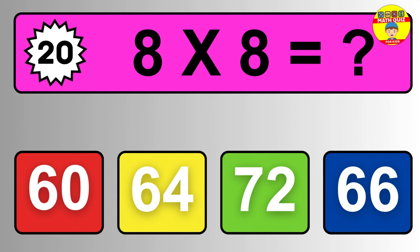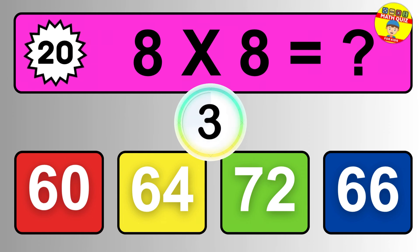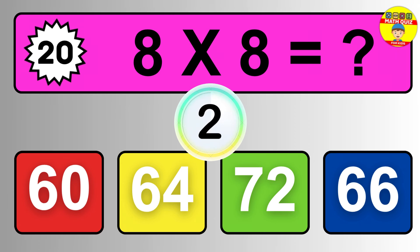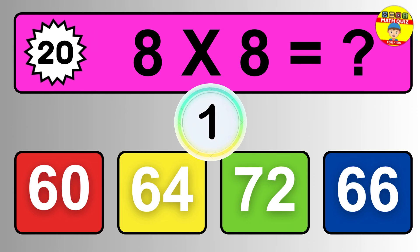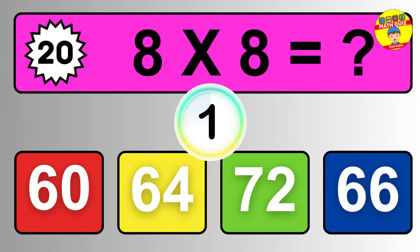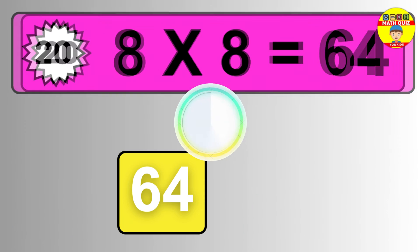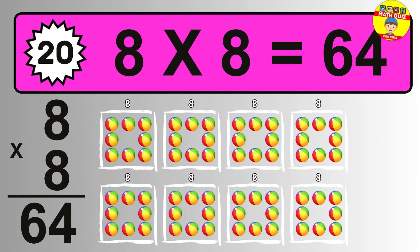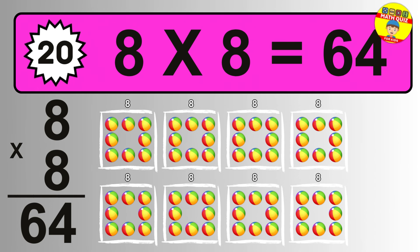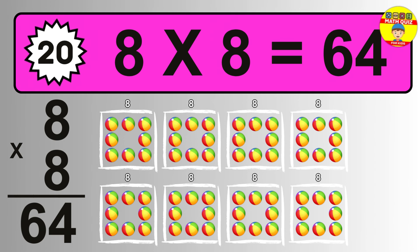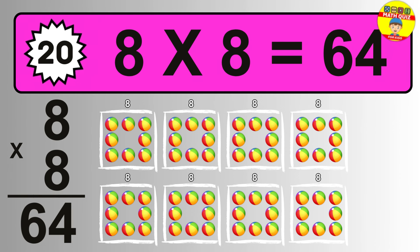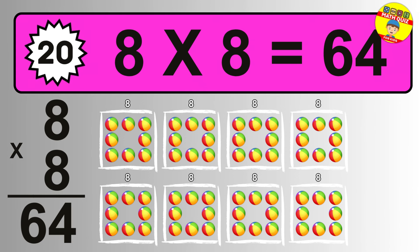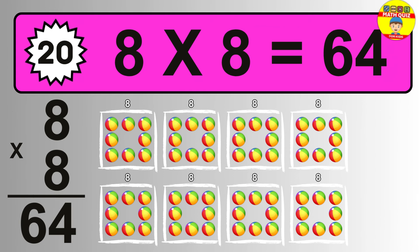Question twenty. Eight times eight equals what? The answer is eight times eight is 64. To calculate, we have eight groups with eight balls each one. So how many balls do we have? 64 balls.